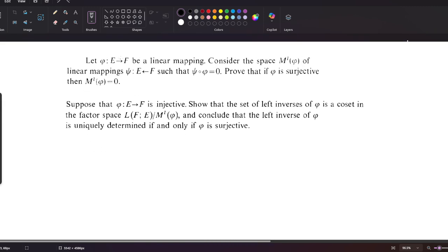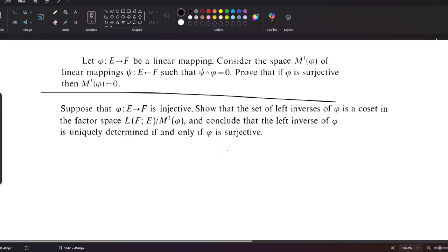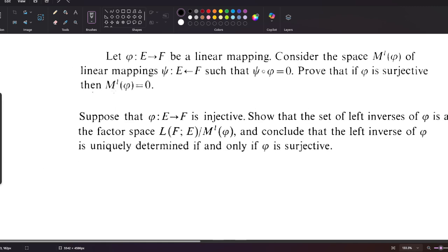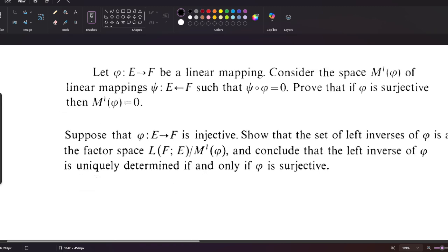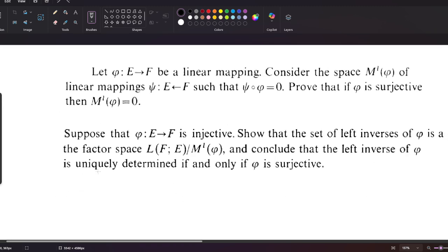Now let's begin with the first part. We have phi, a linear mapping from E to F, and the space M'(phi) of linear mappings from F to E such that psi composed with phi equals zero. We need to prove that if phi is surjective, then M'(phi) equals zero.